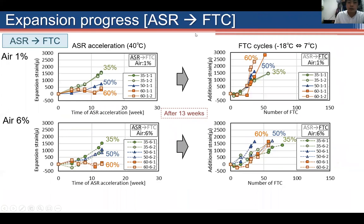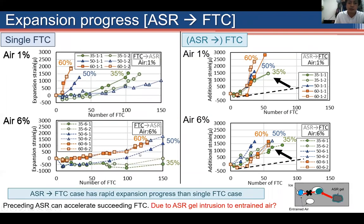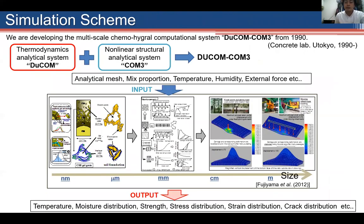In the combined case, after 13 weeks of ASR acceleration, the process was converted to freezing-thawing cycles. Comparing the combined ASR-then-FTC case with the single FTC case, the combined case shows more rapid expansion progress. This means that preceding ASR can accelerate succeeding FTC, likely due to ASR gel intrusion into entrained air bubbles, causing the loss of their protective function.